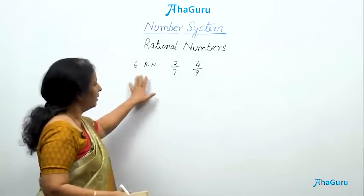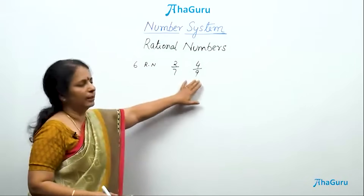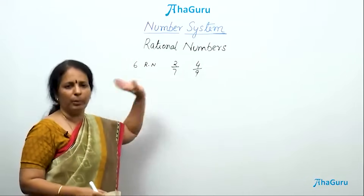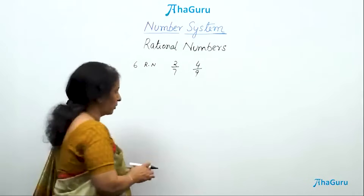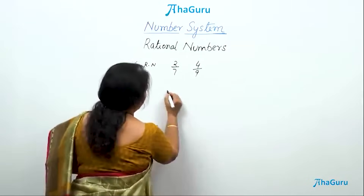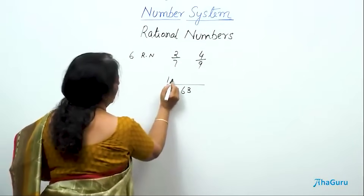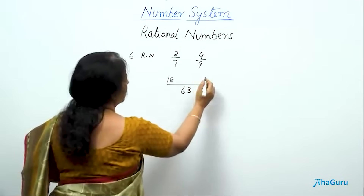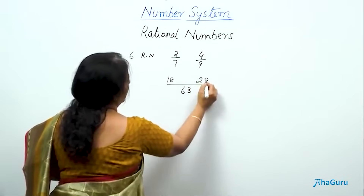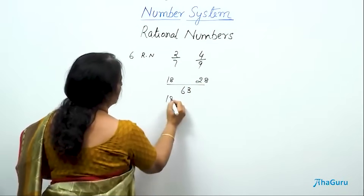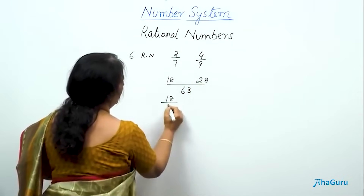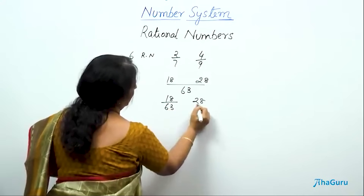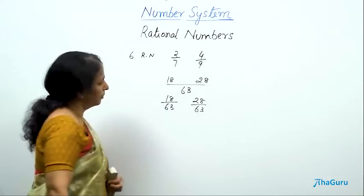As the standard method, first we will see that the denominators are not the same, so we will make them the same to start with. We find the LCM, which comes to 63 — that is 9 times 7 for 63. So the numbers become 18/63 and 28/63.